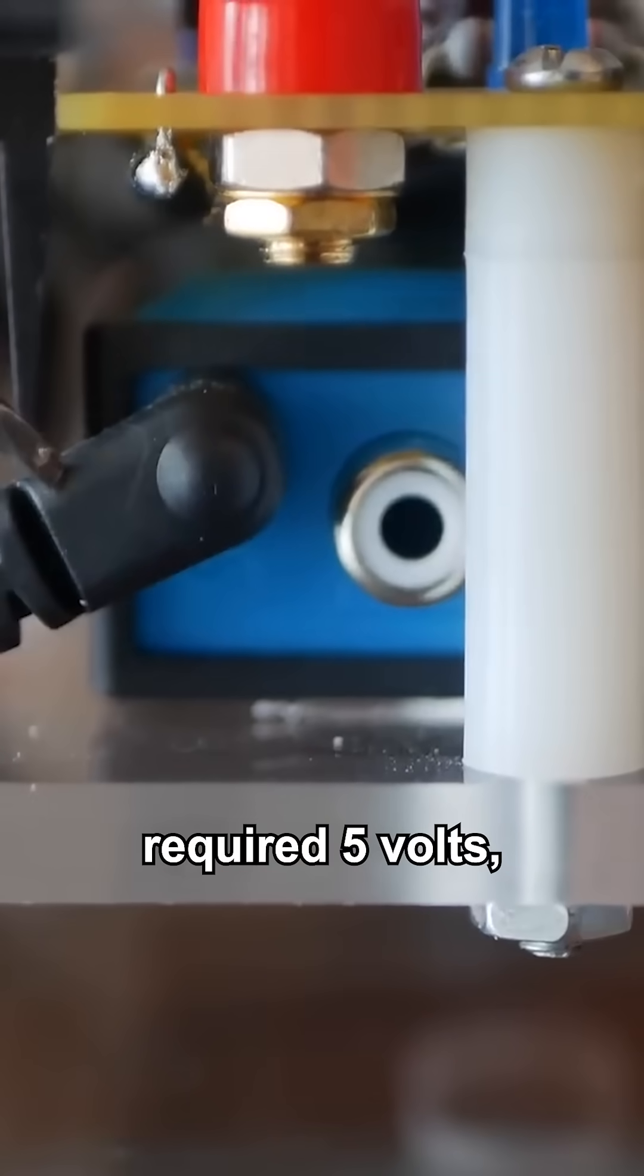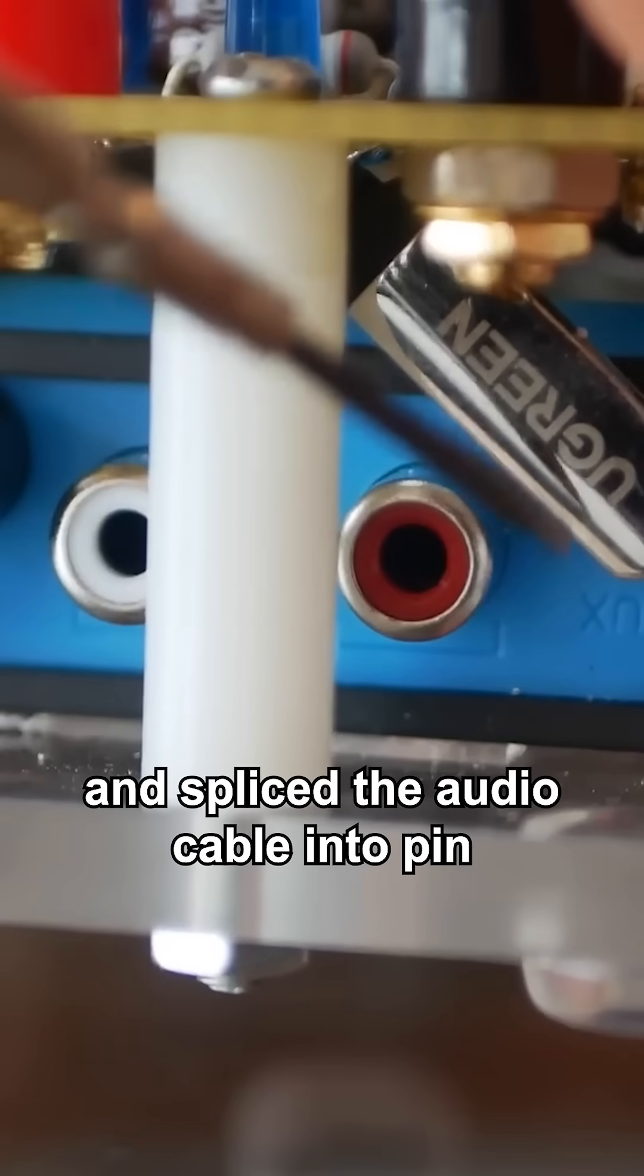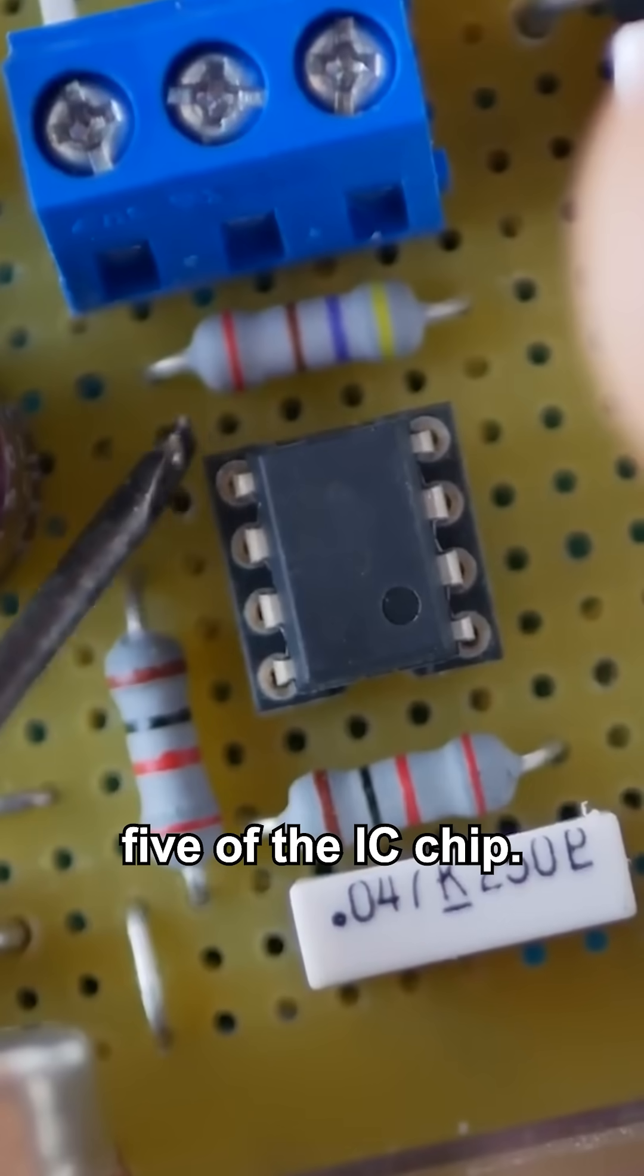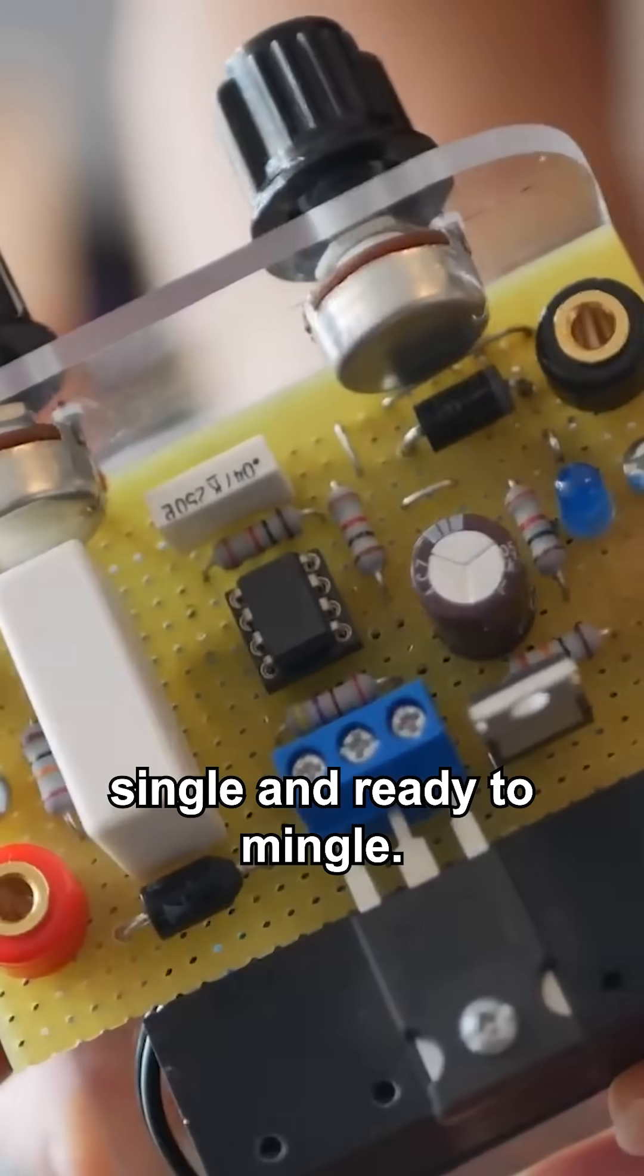The Bluetooth required 5 volts, so I spliced the power cord into a 5 volt regulator and spliced the audio cable into pin 5 of the IC chip. In the end it turned out great. All-in-one, totally compact, single and ready to mingle.